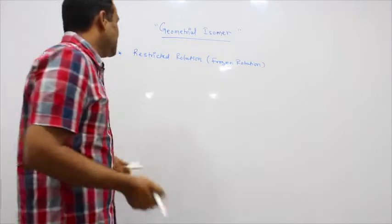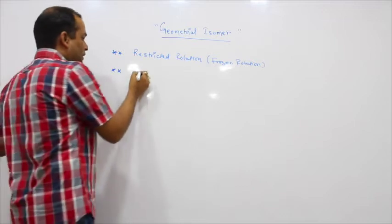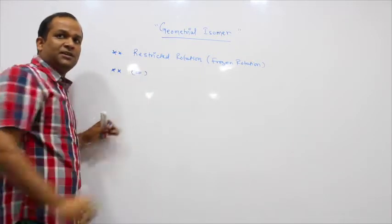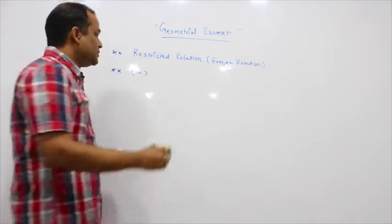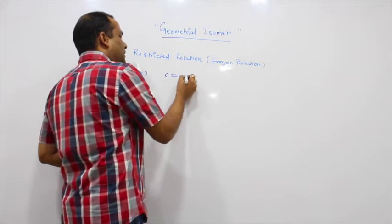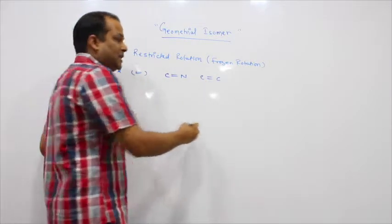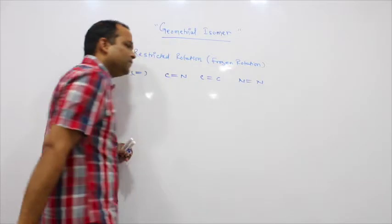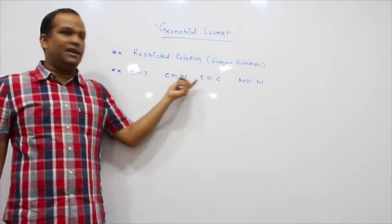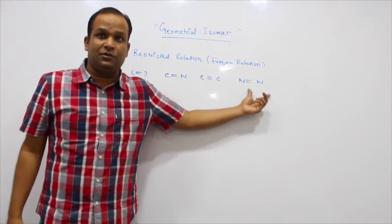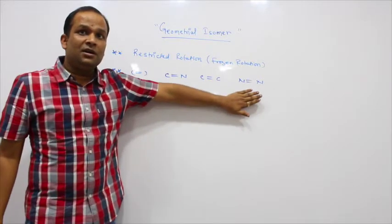How can we restrict rotation? It is common in double bonds — when there is a double bond, there is always restricted rotation. A double bond can exist between carbon and nitrogen, carbon and carbon, or nitrogen and nitrogen. In all these cases — carbon-nitrogen, carbon-carbon, nitrogen-nitrogen — there is restricted rotation because of the formation of the double bond.